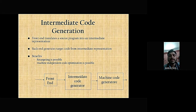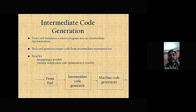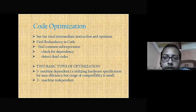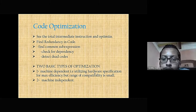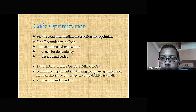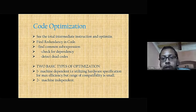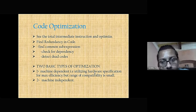The benefits of intermediate code generation are: number one, any targeting is possible; number two, machine independent code optimization is possible. Here is the diagram of intermediate code generation. We use code optimization to reduce the total intermediate instructions, and hence we can find redundancy in code.